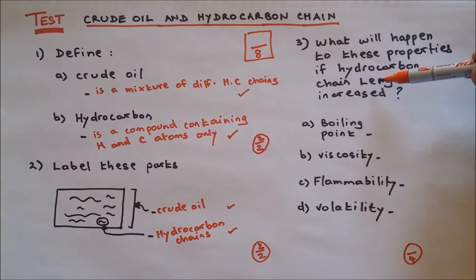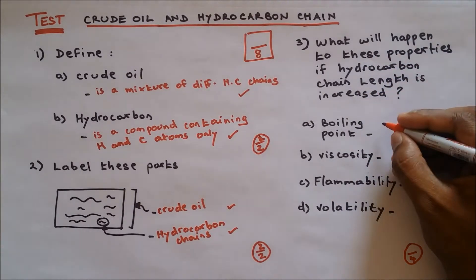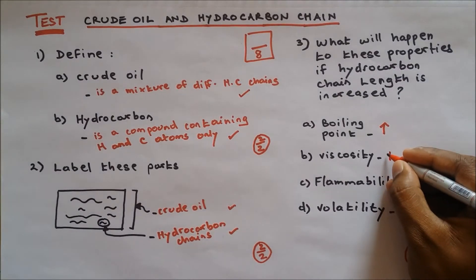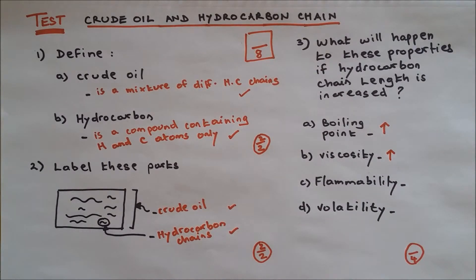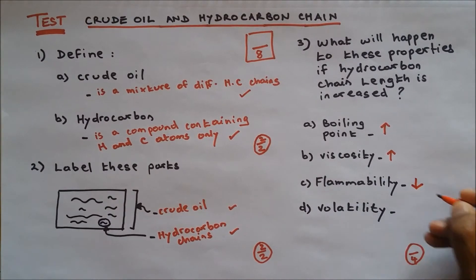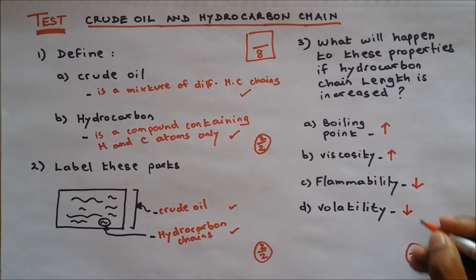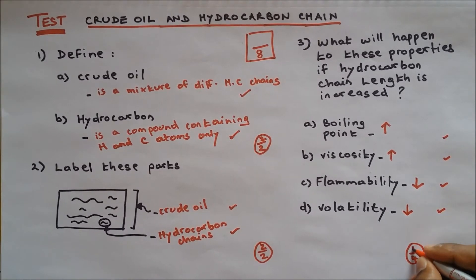Question number three: what will happen to these properties if hydrocarbon chain length is increased? If the length increases, boiling point increases. Viscosity — how thick the substance is — increases. Flammability — how easily it catches fire — decreases, because longer chains won't catch fire as easily. Volatility — how easily it forms into a gas — also decreases. Four points, four out of four.